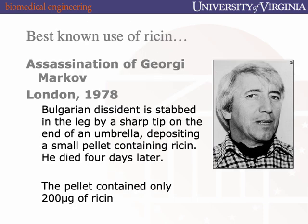One of the most famous uses of ricin — a historical aside — is actually an assassination attempt by the KGB about 40 years ago. There was a Bulgarian dissident in London, and a KGB agent came up with an umbrella tip with a couple hundred micrograms of ricin on the tip, poked the guy in the leg, and then walked away. He was in the emergency room a few days later and dead a day or two after that.